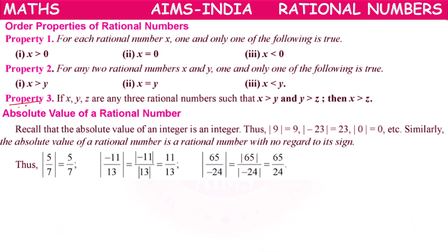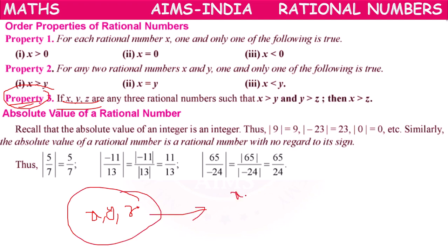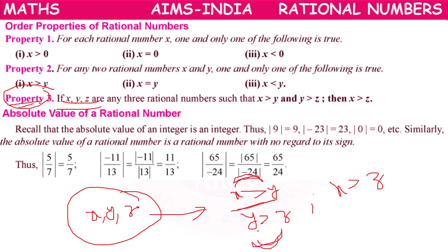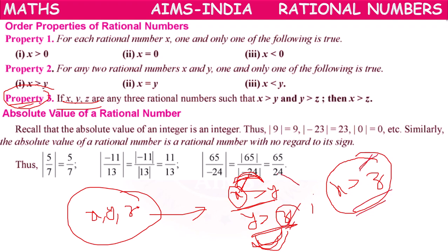According to Property 3, if there are three rational numbers x, y, z such that x is greater than y and y is greater than z, then compulsorily x will be greater than z. So indirectly, we are comparing x and y, and comparing y and z. Since x > y and y > z, x will also be greater than z. This is Property 3.